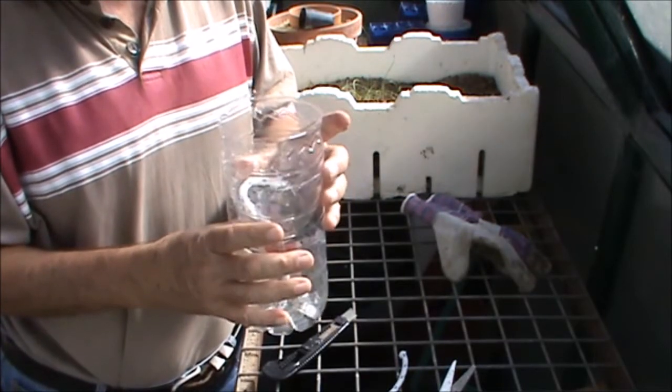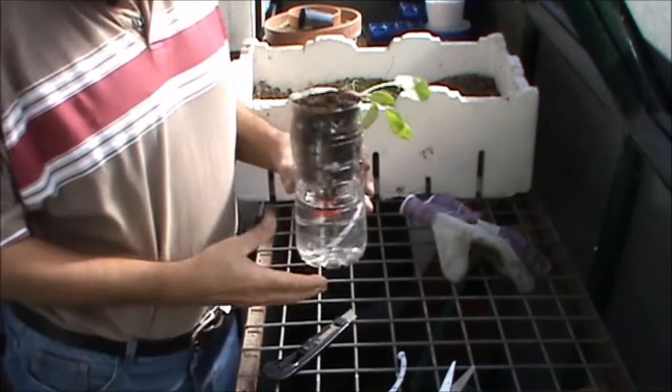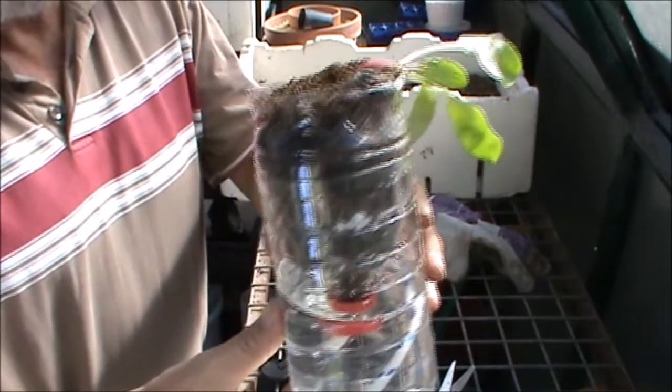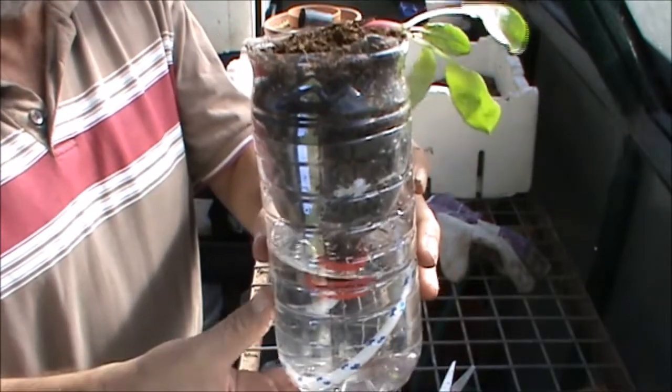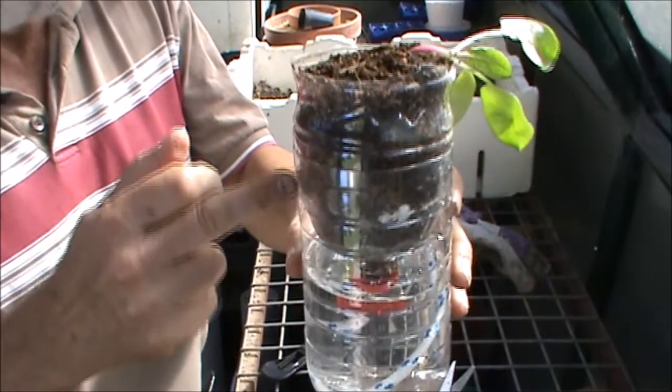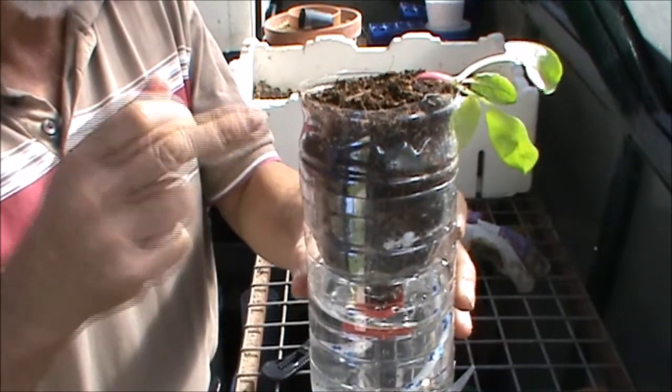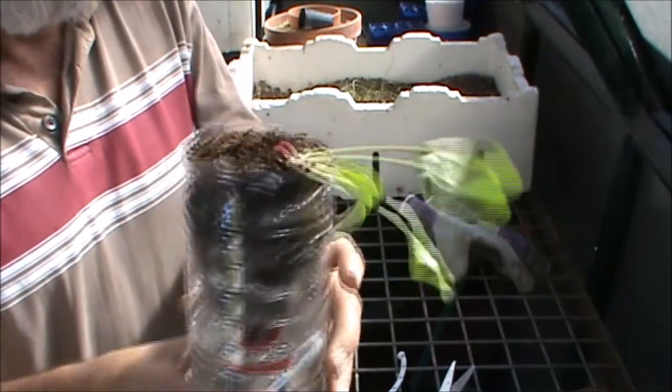So here it is all planted out. You have water in the bottom, the wick takes the water up into the growing medium, you plant up the top. All you have to do is keep an eye on the water reservoir, make sure it's always got some water in it, and away you go.